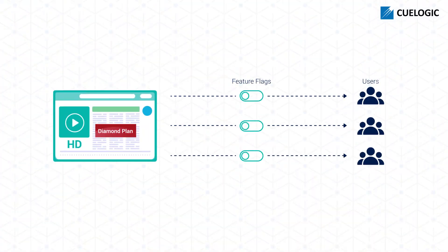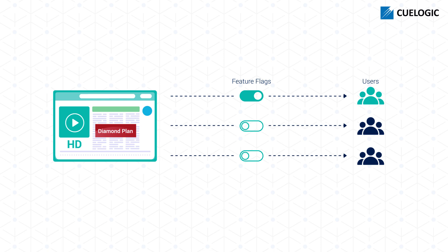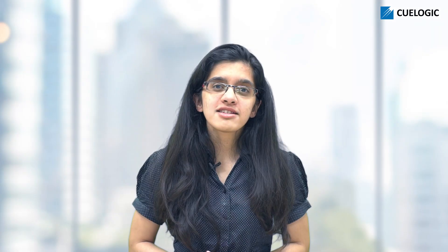Feature flags will allow you to turn on diamond membership privileges for a selected number of users, while other users will have continuous and uninterrupted access to their own plans with no disruptions. This is also called a canary release, wherein a feature is turned on for a specific cohort of users. Key metrics, such as engagement rate and user satisfaction scores, are monitored to confirm that the new features do not negatively affect end users.